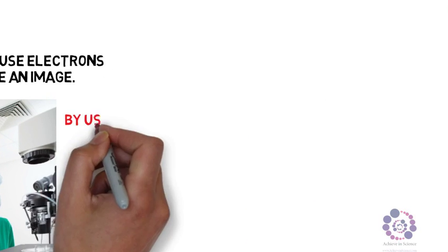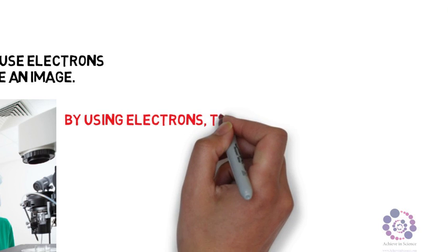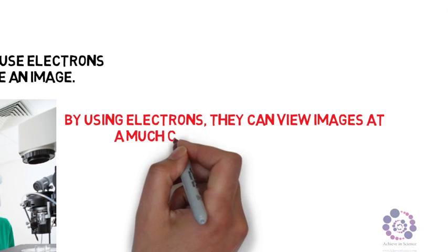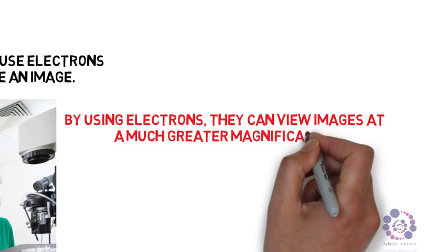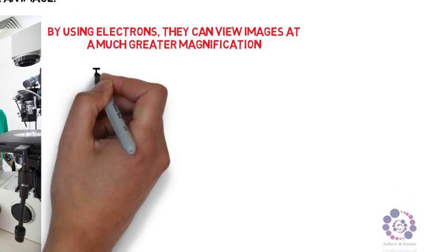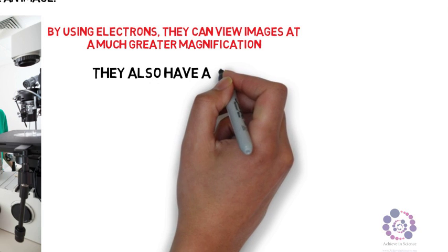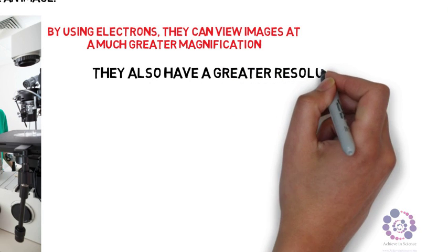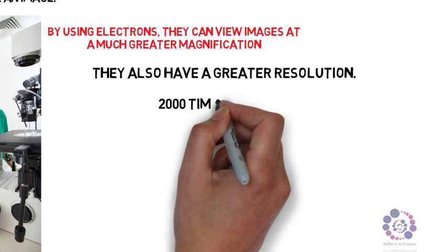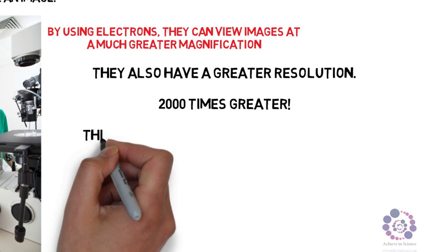By using the electrons, you can actually view images at a much higher magnification. They also allow you to see a greater resolution, which basically means greater amount of detail. Two thousand times greater resolution.